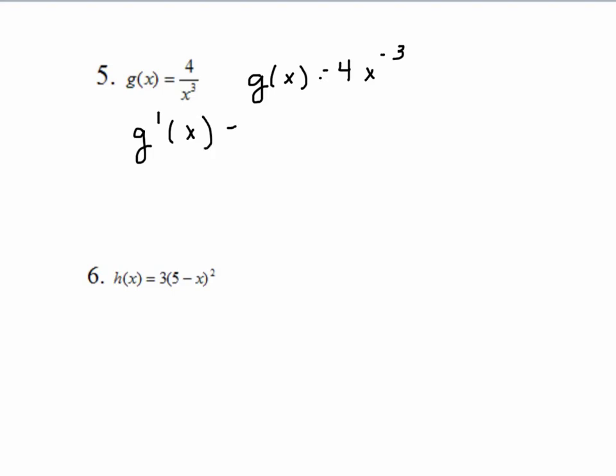g prime of x then, would be negative 3 times 4, negative 12, x to the negative 3 minus 1 power. And I write this out because I want to make sure that you're not going to make careless mistake here. That would give us negative 12x to the negative fourth power. Remember, you're decreasing your power by 1.